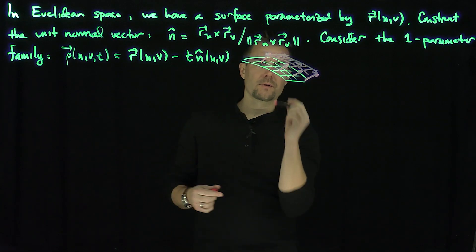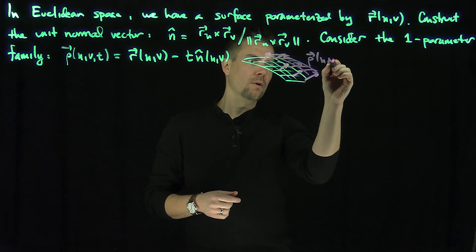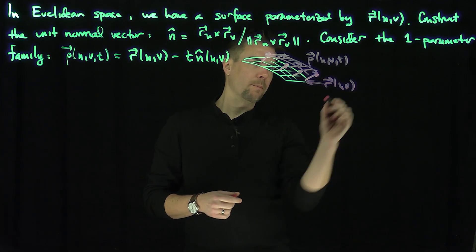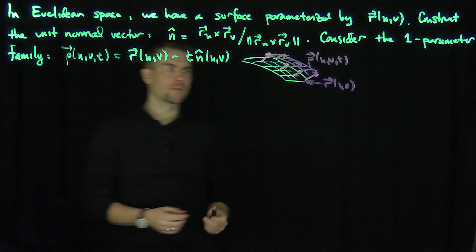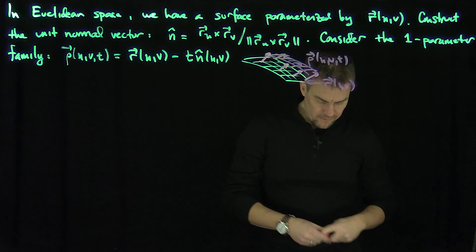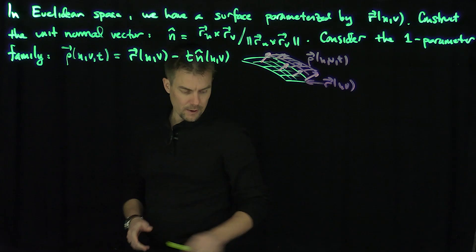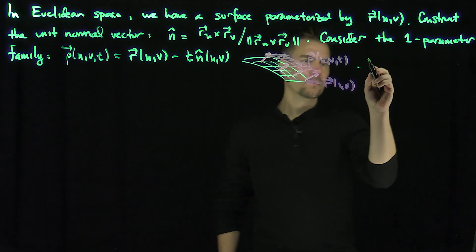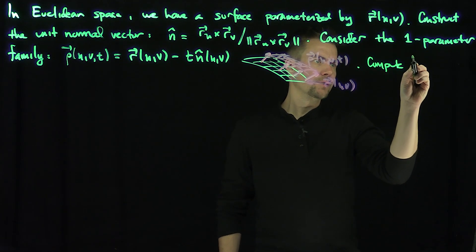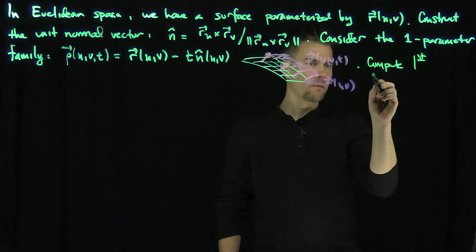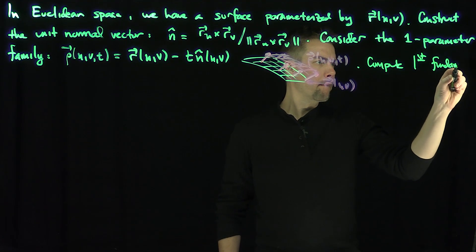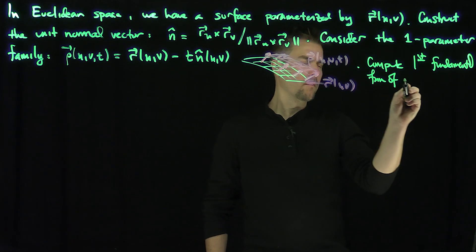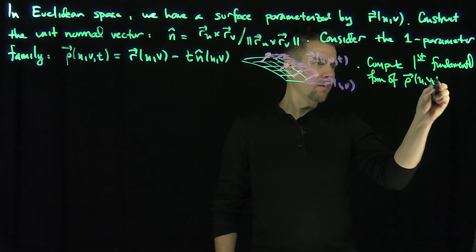So we're filling a little bit of space with all these different surfaces — a normal translation of all these surfaces. Now what we're going to do is find the first fundamental form of this rho. So let's compute the first fundamental form of rho of u, v, t.